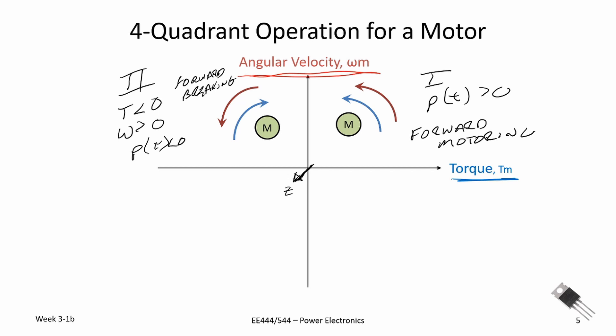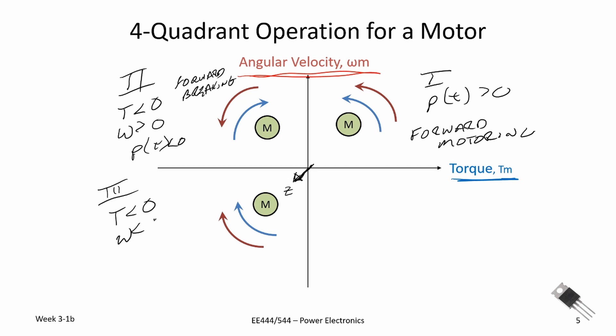Now let's go to quadrant three. In quadrant three our torque is negative — a clockwise rotation — and our angular velocity is also negative, also in a clockwise rotation. Our instantaneous power is greater than zero, so the device is absorbing electrical energy by passive sign convention. This quadrant is called reverse motoring.